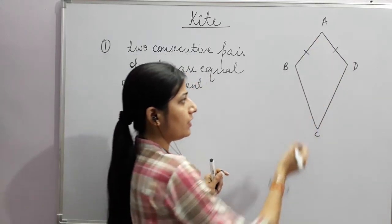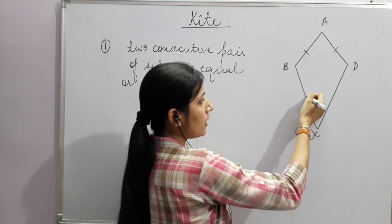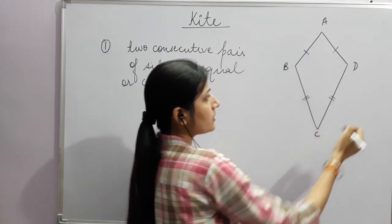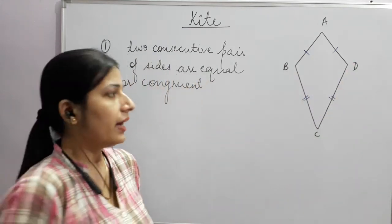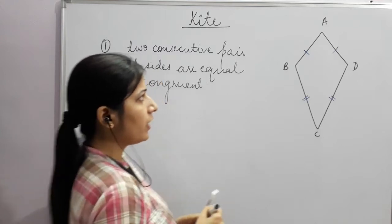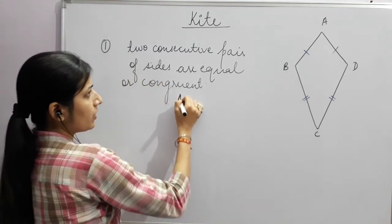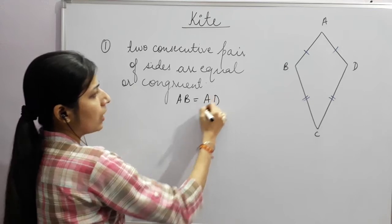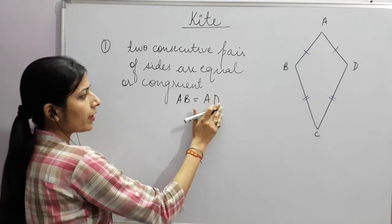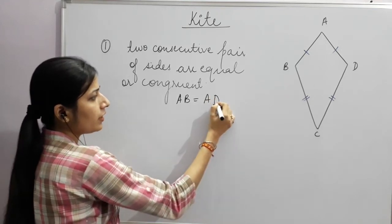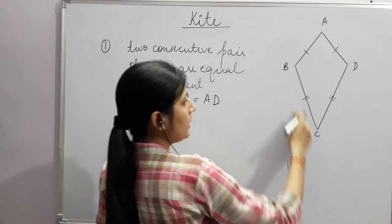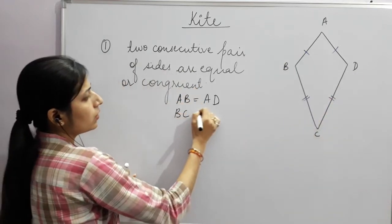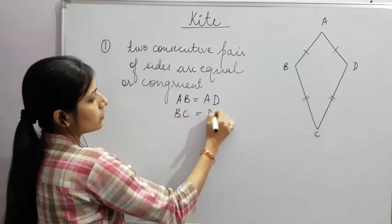One pair: sides AB and AD are equal to each other. The other pair: BC and DC are equal to each other. So we write AB = AD, and BC = DC. These are the two consecutive pairs of sides.